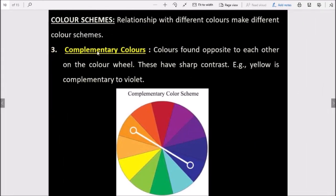Next, complementary colors. Colors that are found opposite to each other on a color wheel are complementary colors. They have sharp contrast. For example, yellow is complementary to violet. So opposites which are very contrasting are known as complementary colors, like violet-green, orange-blue, red-green. These are our complementary colors.